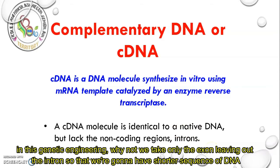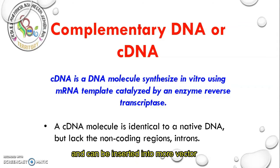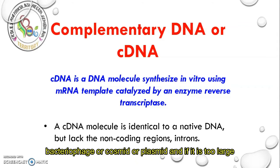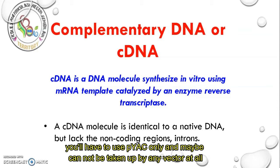In genetic engineering, why not take only the exon, leaving out the intron? That gives us a shorter DNA sequence that can be inserted into more types of vectors — like a bacteriophage, cosmid, or plasmid. If the sequence is too large, you would have to use a YAC, and it may not be taken up by any vector at all.